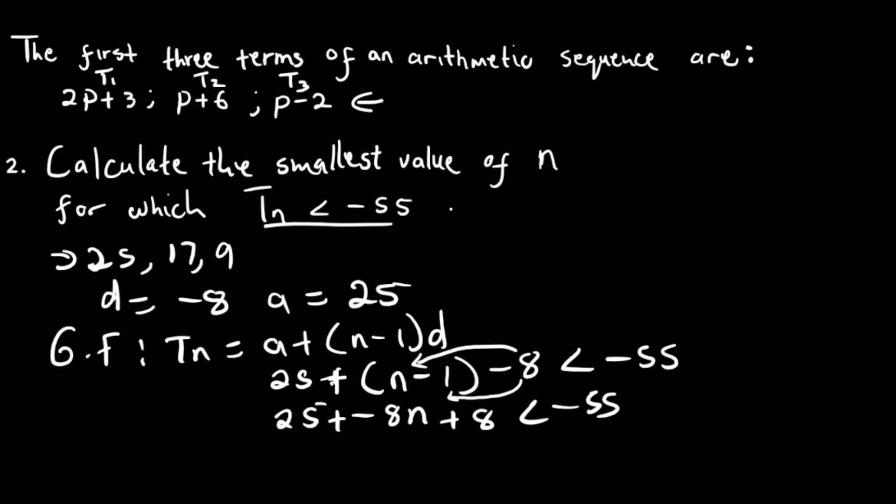And then you transpose everything to that side, you have minus 8n, it's less than minus 55, minus 8, minus 25. And then you add everything, you have minus 8n, less than minus 88.